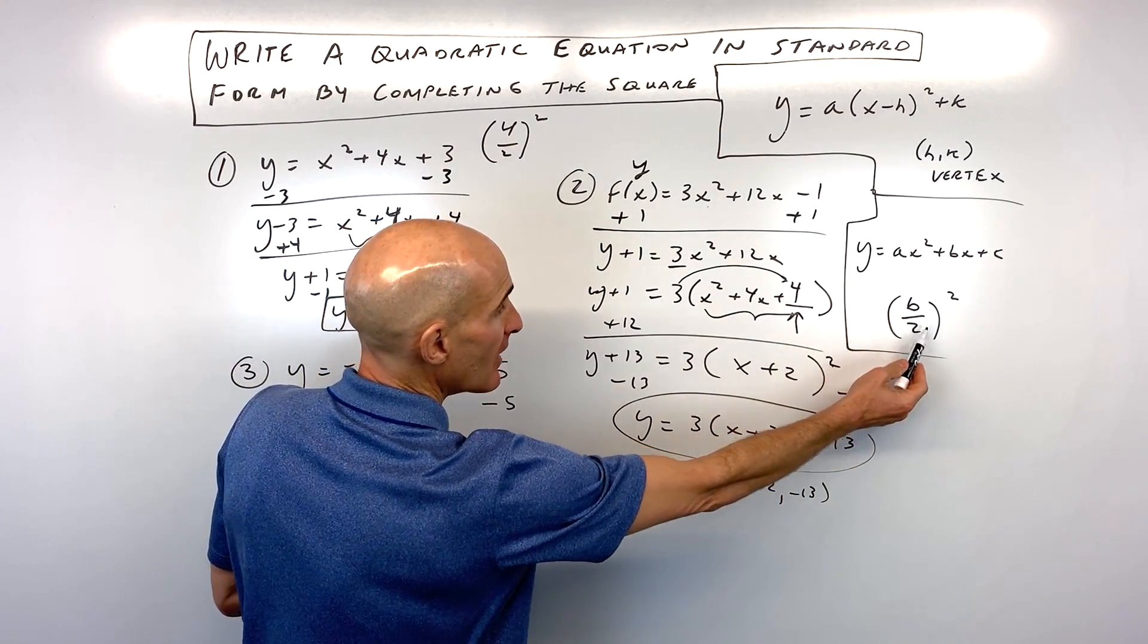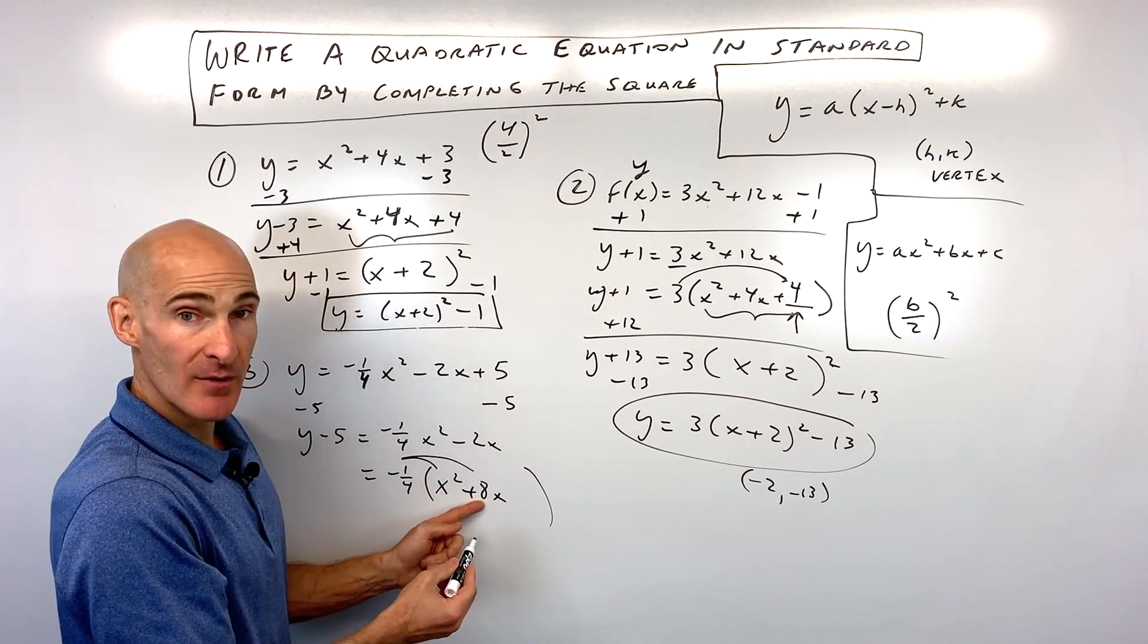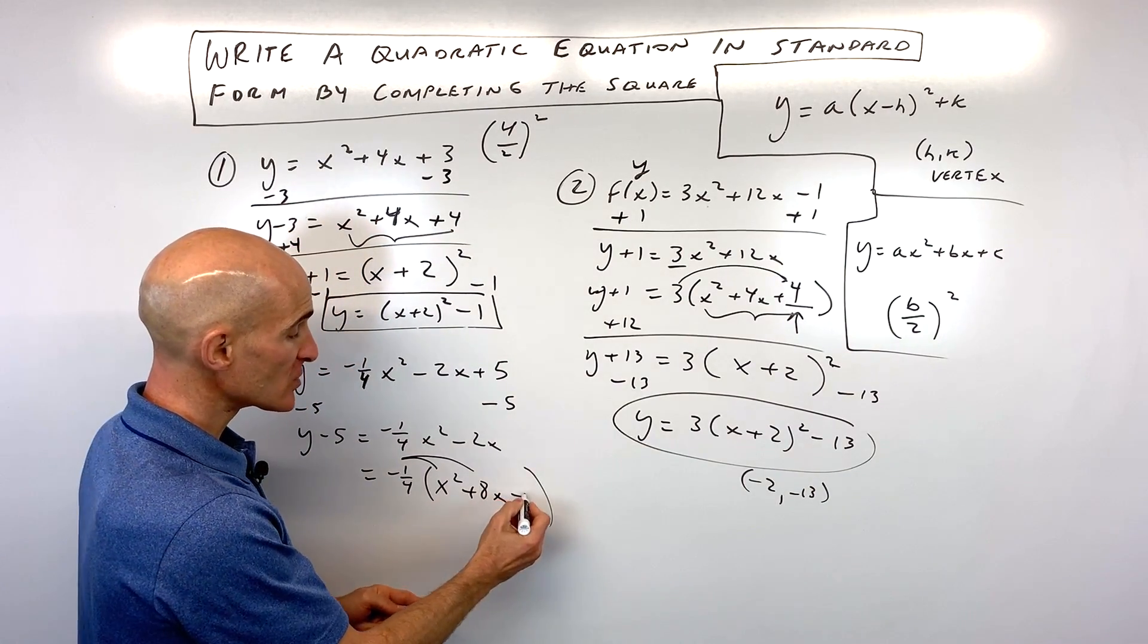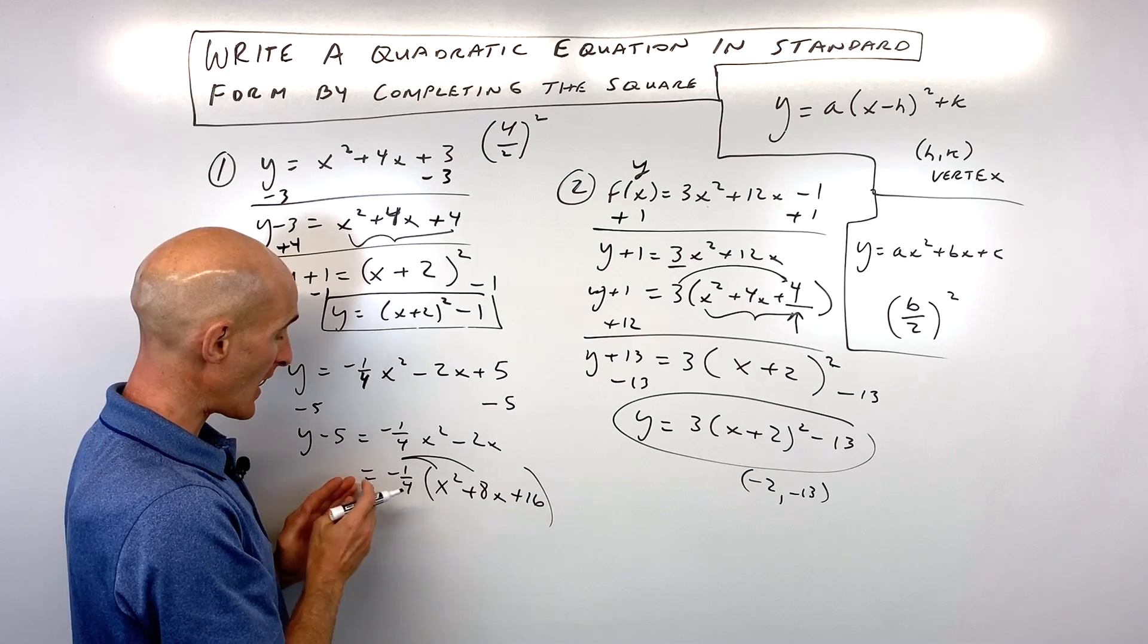Here's where we complete the square. B divided by 2 squared. So 8 divided by 2 is 4. 4 squared is 16. So do I add 16 to the left?